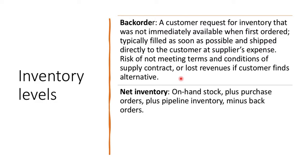Mainly, backorder is a level of inventory when you cannot fulfill on-demand orders. You keep the order and then contact the suppliers, asking them to dispatch the goods immediately to fulfill this order. That level is known as the backorder level.